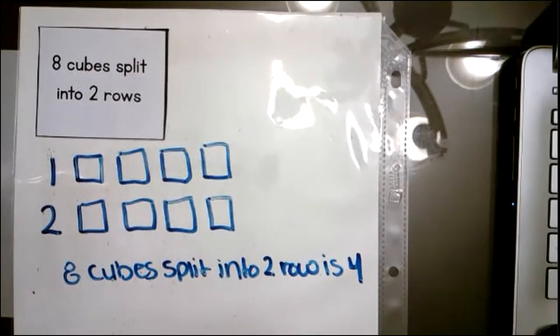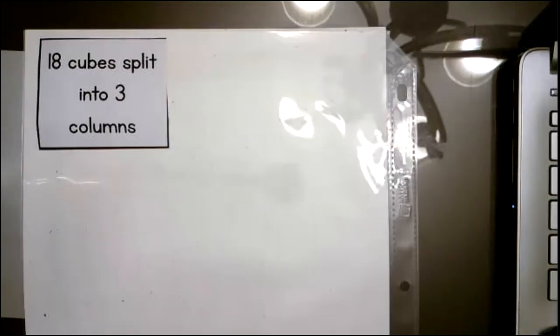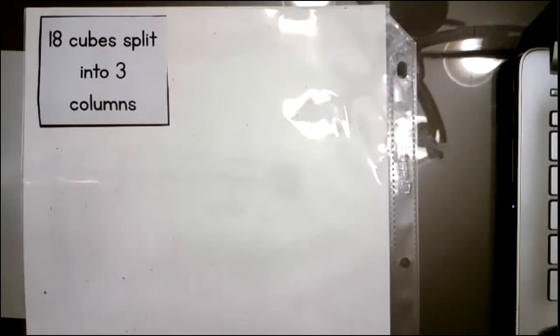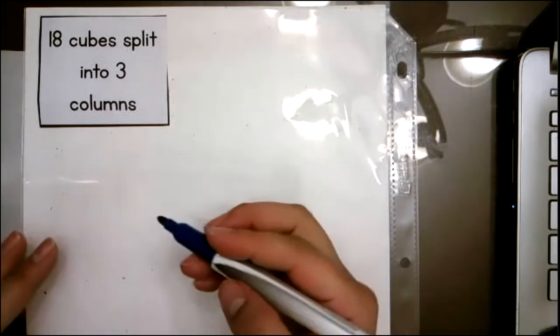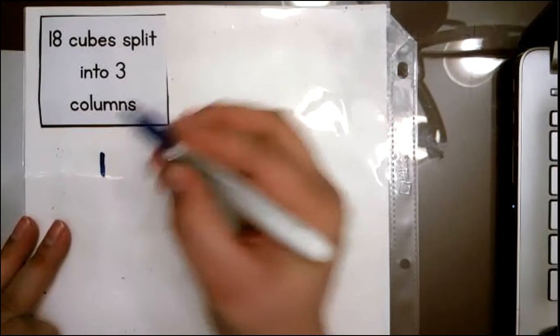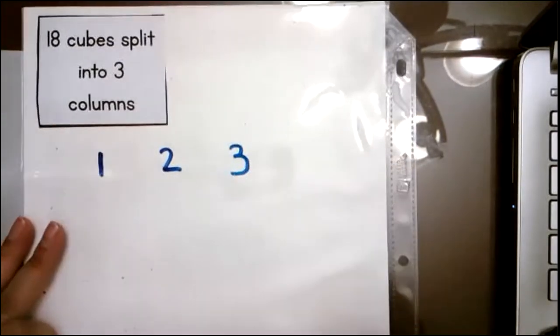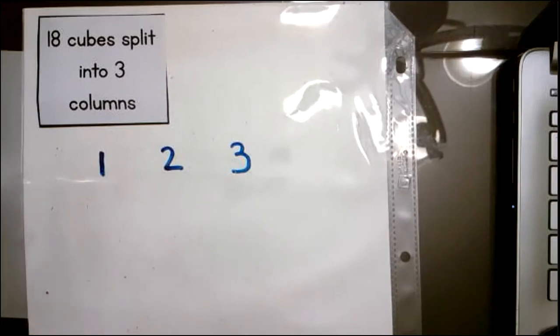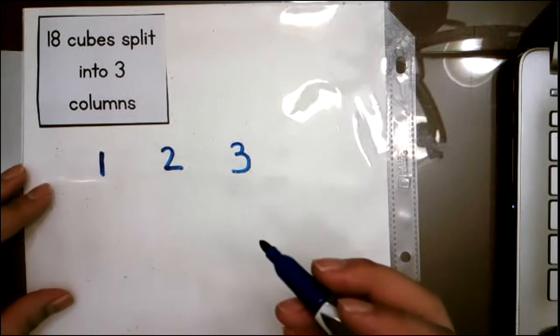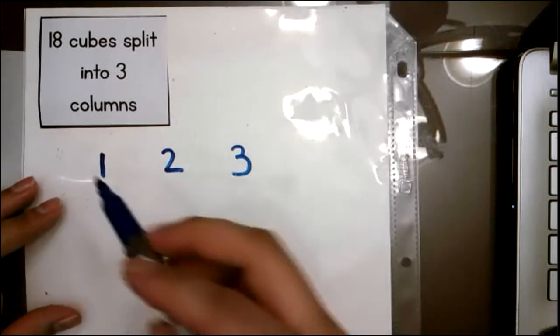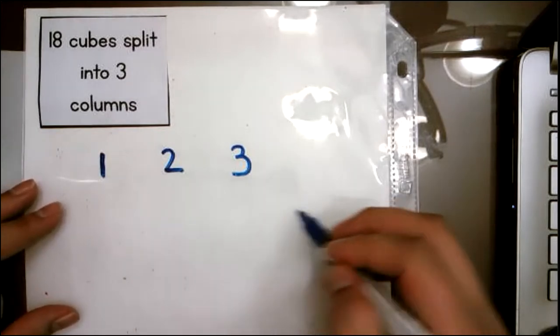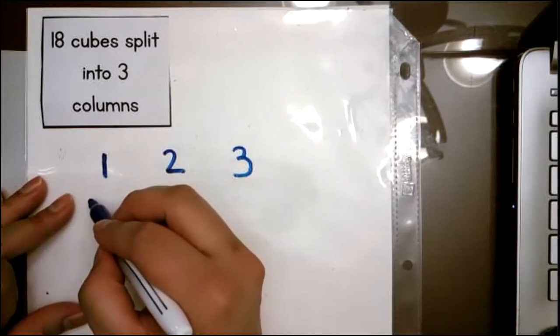Amazing job, friends. Let's do one more example. All right, friends. So this one may be a little bit trickier, and that's because it says 18 cubes is split into three columns. Remember, columns go vertical, up and down, as in the two examples we did before were rows that go horizontal. So we have three columns. So I'm going to label each column. And I'm putting my numbers at the top because columns go up and down.